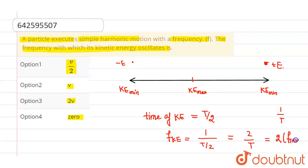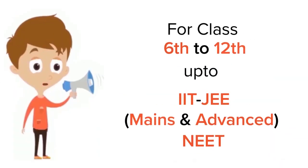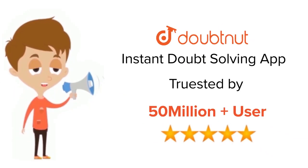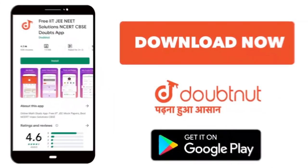Hence the correct option will be option 3. I hope you understand, thank you. For class 6-12, IIT-JEE and NEET level, trusted by more than 5 crore students, download Doubtnet app today.